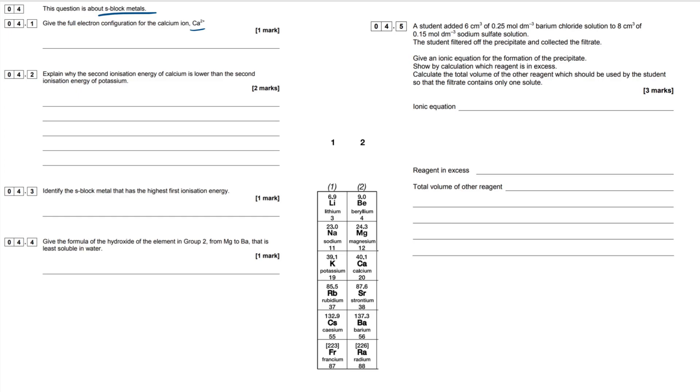So question 4.1 then, give the full electron configuration of the calcium ion. This is the method that I always use. Sometimes it can screw you over, so maybe you don't want to use it, but when it's not dealing with transition metals, it can be quite useful. What I like to do is lay them out like this: 1S, 2S, 2P, 3S, 3P, 3D, 4S, 4P, 4D.